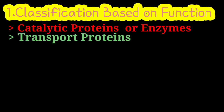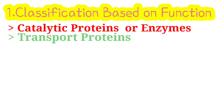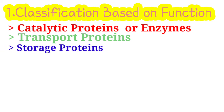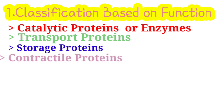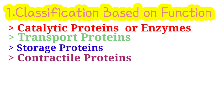Transport proteins are involved in the transportation of various molecules. For example, hemoglobin transports oxygen; albumin transports various molecules like calcium, drugs, and bilirubin; transferrin transports iron; and copper is transported by ceruloplasmin.